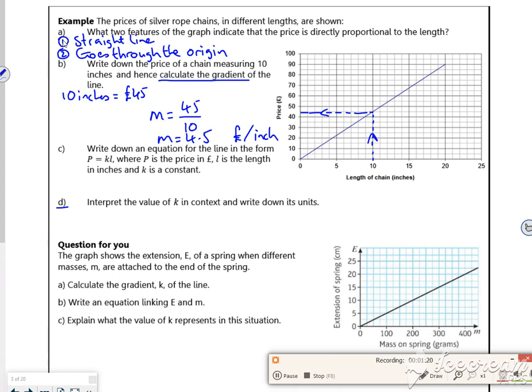So it says write down an equation for it. So let's have P is the price. So 4.5, L is the length. There we go. So we've got L for that one, P for that one. So then x and y.